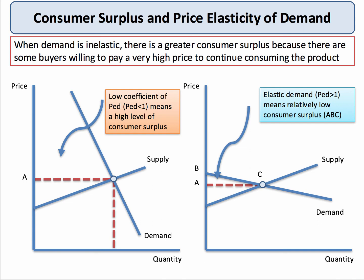Keep in mind, it's the area underneath the demand curve and above the price. Now, let's contrast that with a much more elastic demand curve — coefficient of elasticity greater than one — where consumers are highly price sensitive. You can see that the area underneath the demand curve and above the price is much smaller. So, when the elasticity of demand is very high and you have an elastic demand curve, the area of consumer surplus tends to be relatively low.